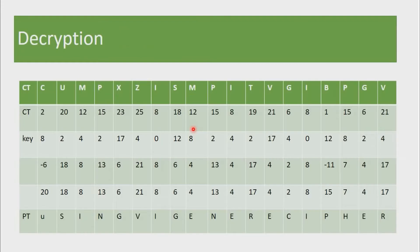The next thing we are looking at is decryption using the Vigenère cipher. Just as with encryption, first we list the cipher text element — the first row is simply listing the cipher text. Then the next thing is to list the numerical values of the cipher text element using the same mod 26 encoding, so C is 2, U is 20.